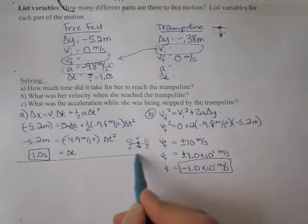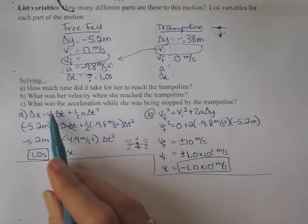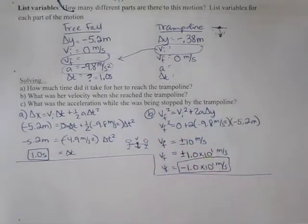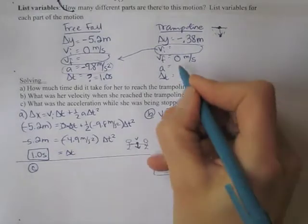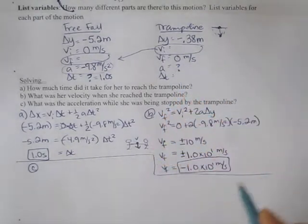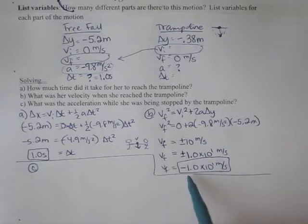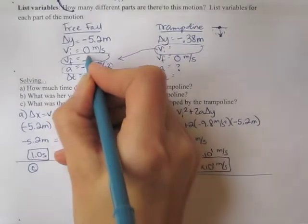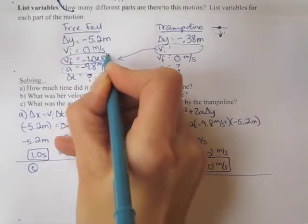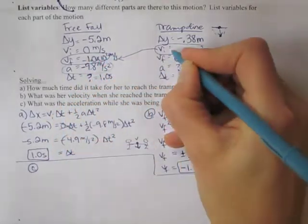Okay, part C. What was the acceleration while she was being stopped by the trampoline? So in C, we're looking for this value here. And I'm going to go ahead and fill in, I know this value now. I'm going to fill in some of these numbers. So negative 1.0 times 10 to the 1 meters per second. And that's also this value.